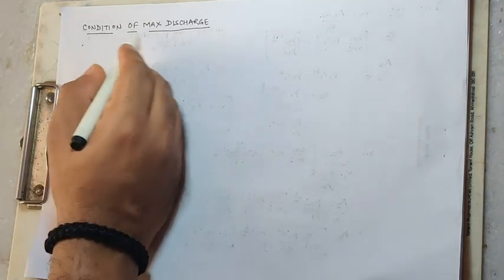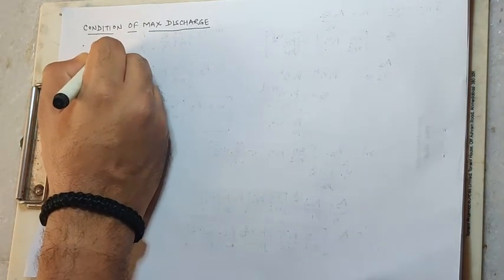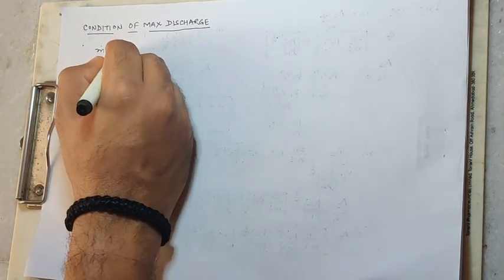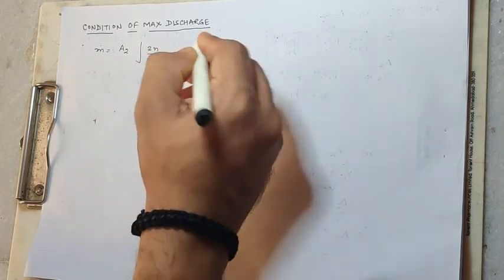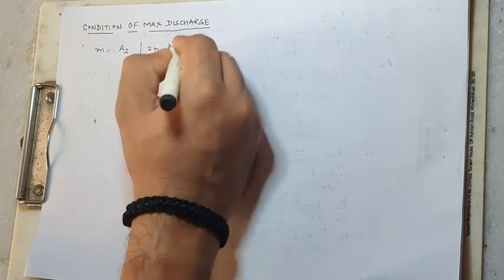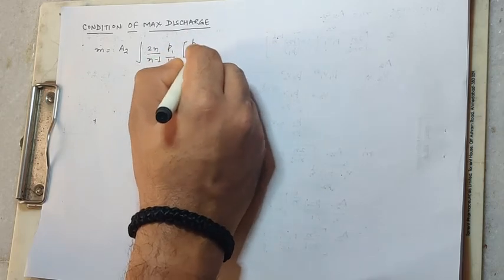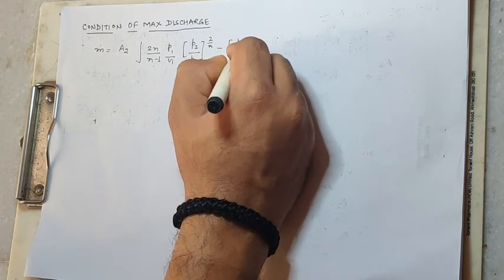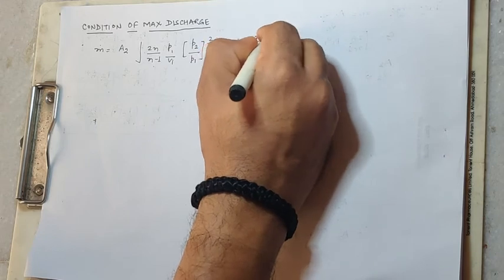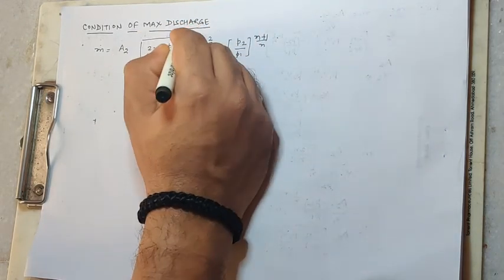Hello everyone. In the last lecture we have seen the derivation for the discharge through the nozzle. Now we will talk about the condition of maximum discharge, which involves the expression P2 over P1 to the power 2/N minus P2 over P1 to the power (N+1)/N, under root.